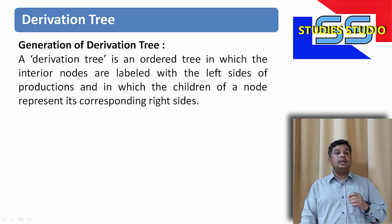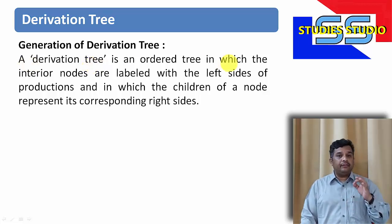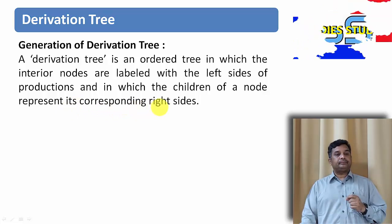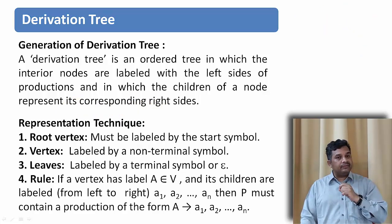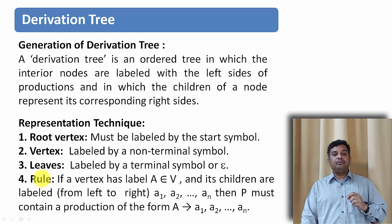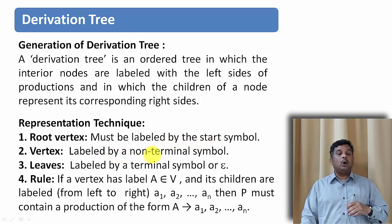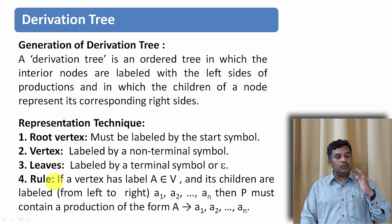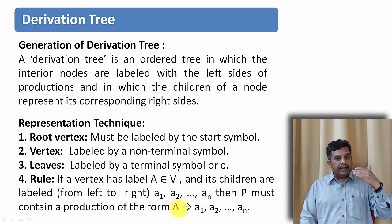To rephrase it, let us see it once more. A derivation tree is an ordered tree in which the interior nodes are labeled with the left side of the production, and in which the children of the node represent its corresponding right child. To represent this, we use a root vertex, interior vertex, and leaf nodes along with the production rules. The root vertex is nothing but the starting symbol of the grammar.